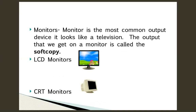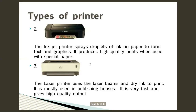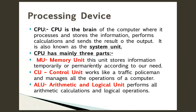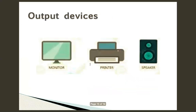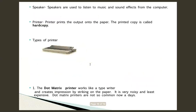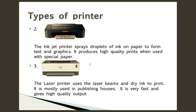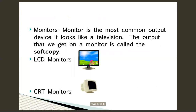A small recap: the processing device is the CPU — it is the brain of the computer, Central Processing Unit, with three main parts: MU, CU, and ALU. Output devices are monitor, printer, and speaker. Speakers allow us to listen to music and other sounds. Printers are used to take print on paper — that printed copy is called a hard copy. There are different types of printers: dot matrix, inkjet, and laser. The output on the monitor is called a soft copy, and there are varieties of monitors like LCD, LED, and CRT.